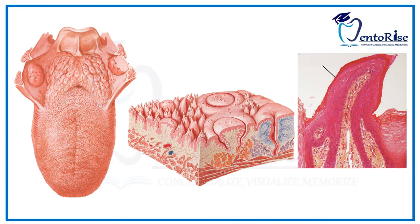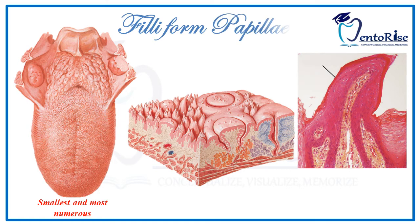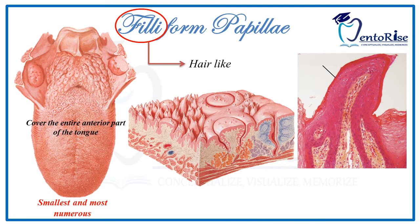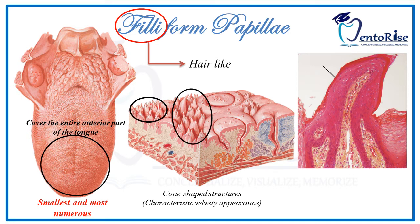Coming to the next papillae, which are smallest in size but most numerous in number — the filiform papillae. Filiform papillae, as the name implies, are hair-like structures present on the entire anterior part of the tongue. Because of their hair-like or conical shape, they impart a characteristic velvety appearance to the surface of the tongue.